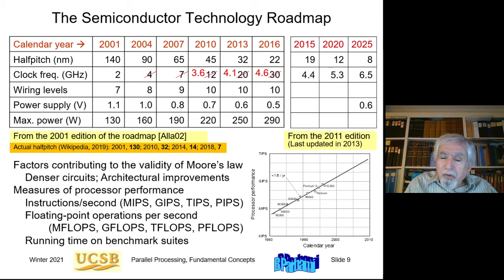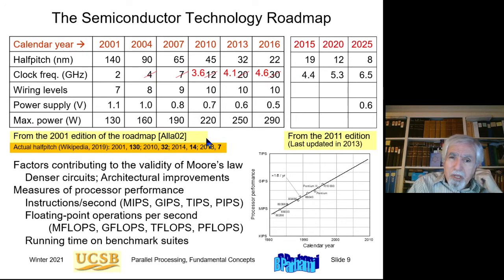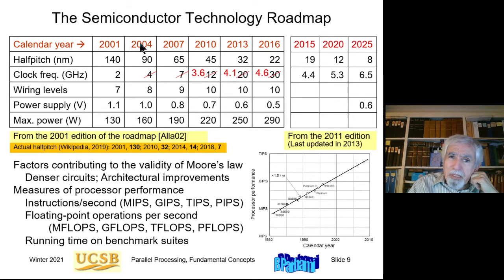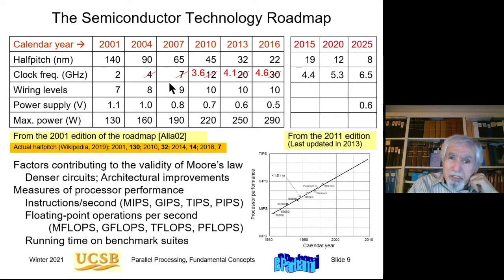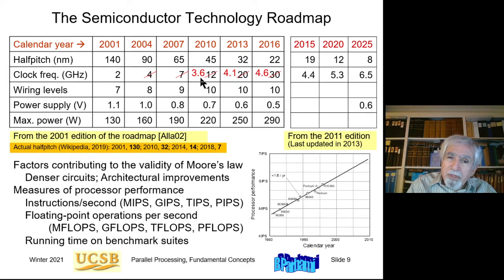This semiconductor technology roadmap is produced regularly to tell us where semiconductor technology is headed. This table from the 2001 edition predicted what would happen to semiconductors in 2004, 2007, and so on. It turned out these predictions were not quite matched — for example, the 2001 prediction for 2010 was a 12 gigahertz clock frequency, but the actual clock frequency was around 3 to 4 gigahertz.